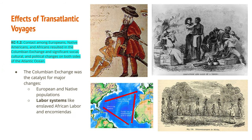Key concept 1.2: contact among Europeans, Native Americans, and Africans resulted in the Columbian Exchange and significant social, cultural, and political changes on both sides of the Atlantic Ocean. The Columbian Exchange was a huge catalyst for change — both Europe and the New World changed dramatically because of the exchange of crops, diseases, and labor systems. Once the encomienda system was done away with due to the poor treatment of natives documented by Bartolomeo de las Casas, it gave rise to the African slave trade. There's your causation and effect.